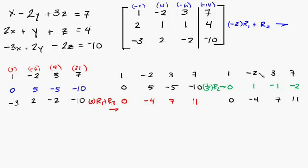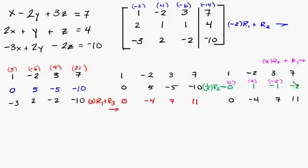So now what we want to do is we want to get a 0 here, then a 0 here. This one would be easier to do. What we can do is multiply this row times 2 and add it to this row. So 2 times row 2 plus row 1, and that's going to equal this. Row 2 basically: 2 times 0 is 0. 2 times 1 is 2. 2 times negative 1 is negative 2. And negative 2 times 2 is negative 4.